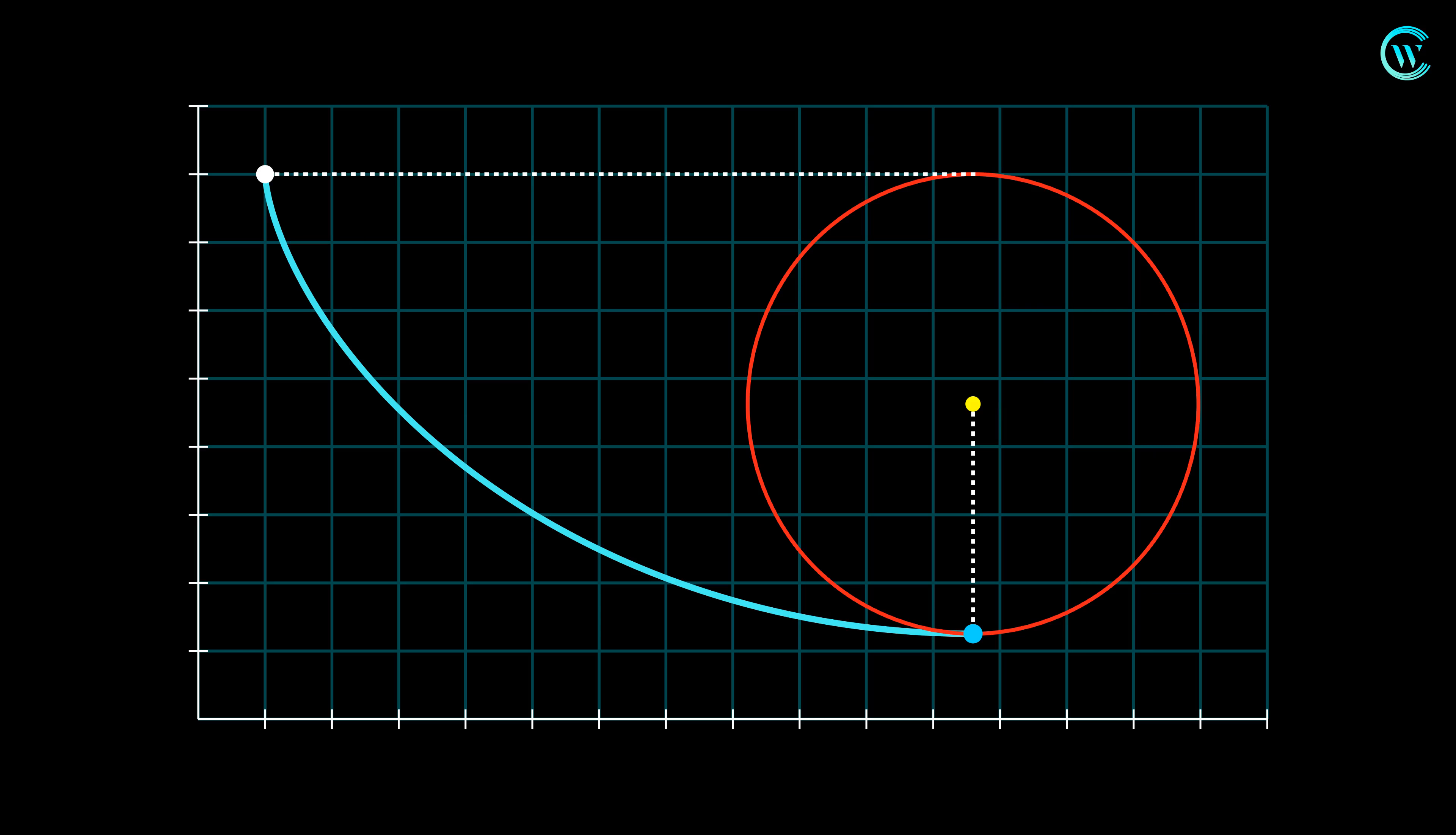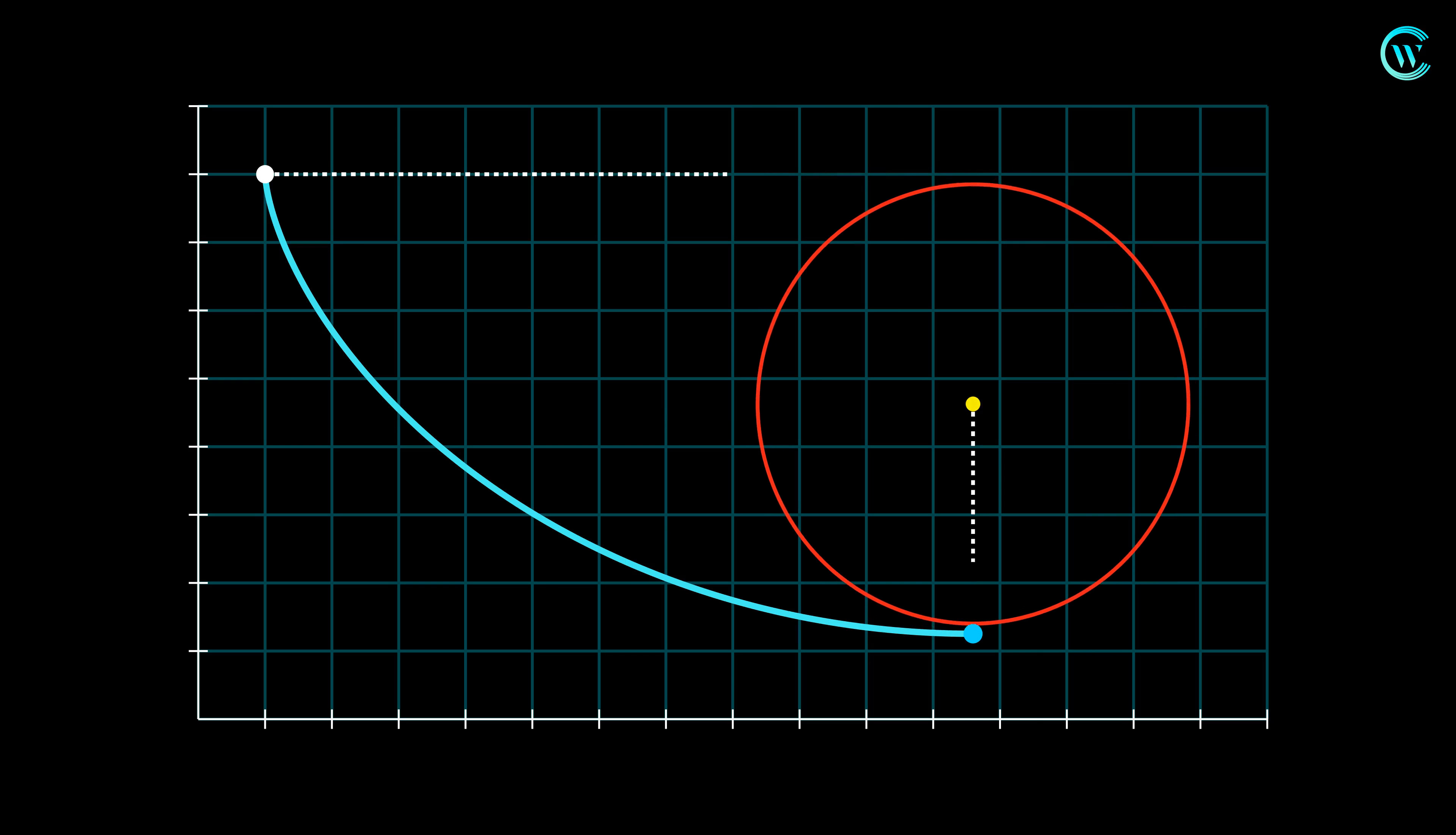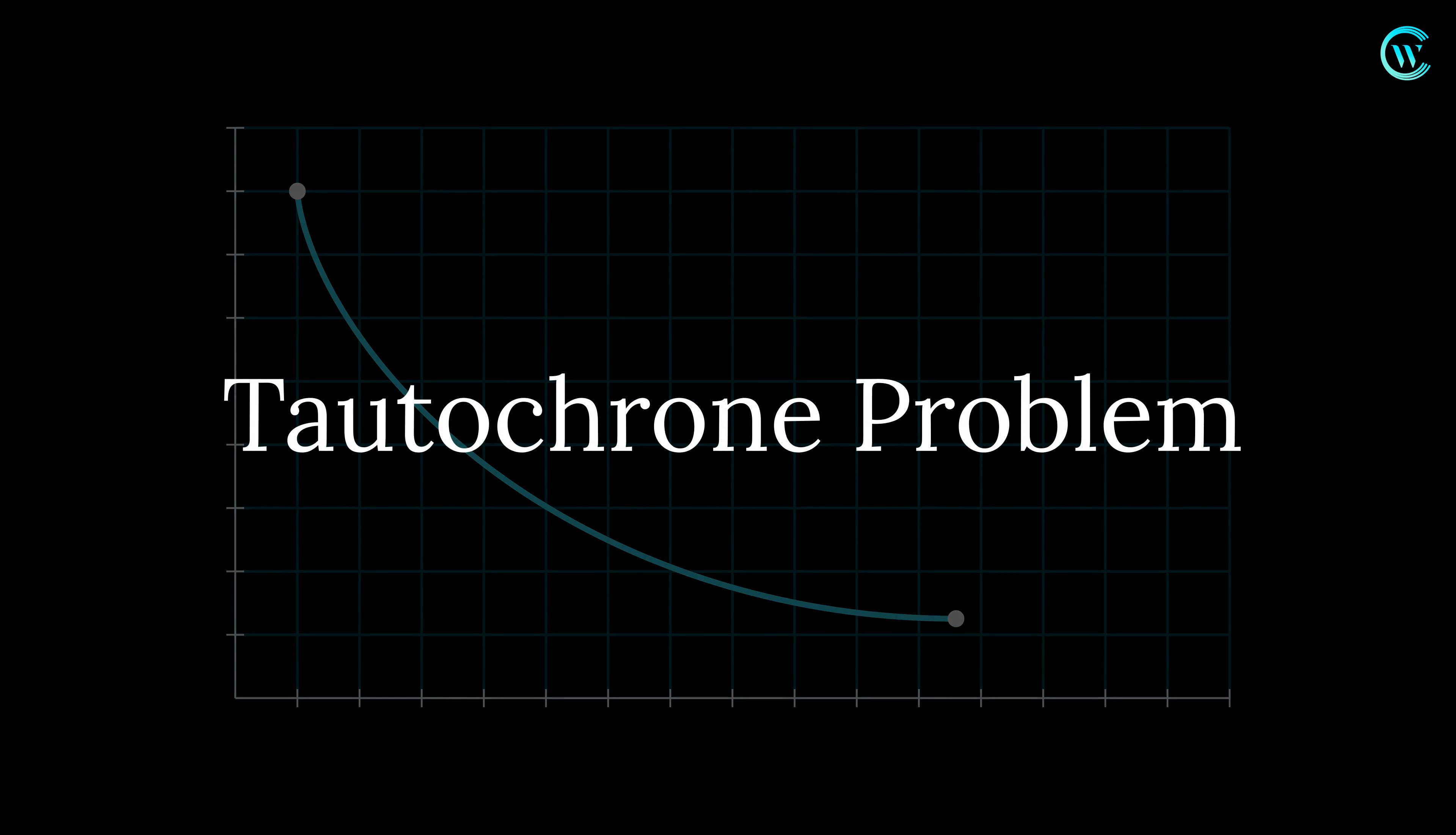Moreover, half arc of a cycloid has special significance as it provides the solution to the Tautochrone problem. The Tautochrone problem asks for a path that makes way for an object placed anywhere along it to reach its lowest point without friction under only the influence of gravity in exactly the same interval of time.